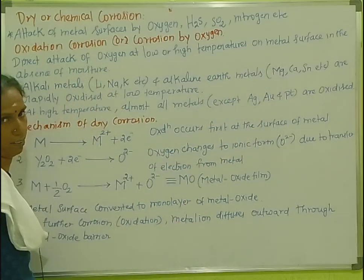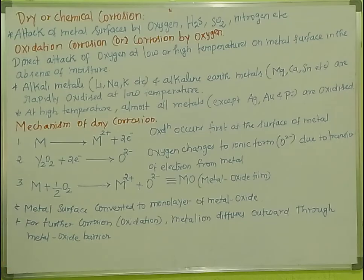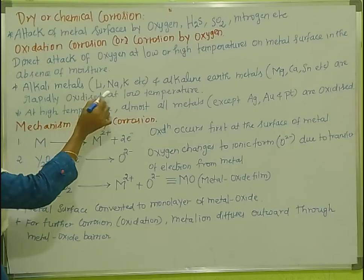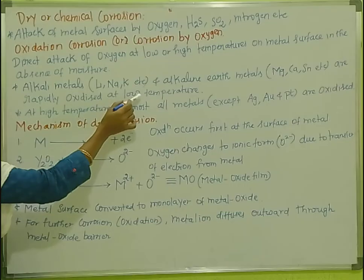Tin — this is a simple thing. Alkaline metals are rapidly oxidized at low temperature. Rapid or fast oxidation occurs. The metal surface is oxidized — that is corrosion. Alkaline metals are fast oxidized at low temperature.